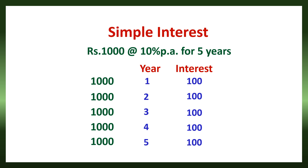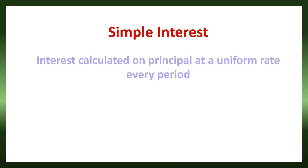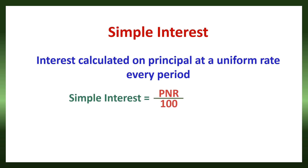Every year, the same interest of 100 is paid. Such an interest is called simple interest. Thus, simple interest is the interest calculated on the principal at a uniform rate every period. The formula to calculate simple interest is PNR divided by 100.